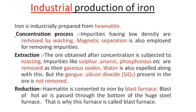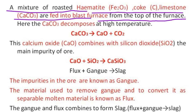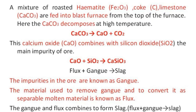This reduction process is detailed. A mixture of roasted hematite, coke, and limestone are fed into the blast furnace from the top of the furnace. The bottom side of the furnace is where output is collected.